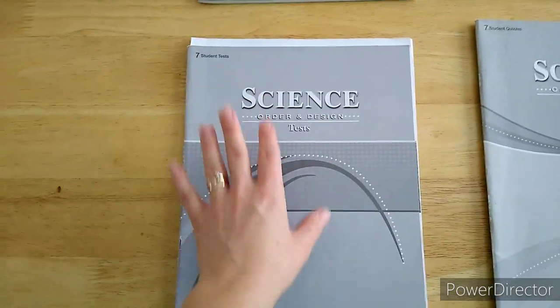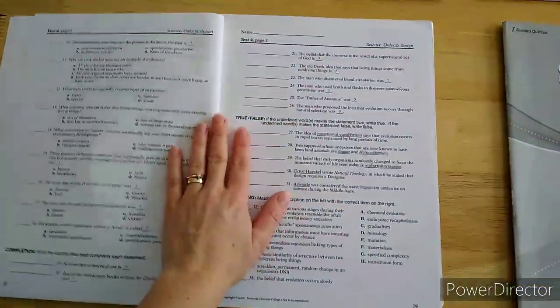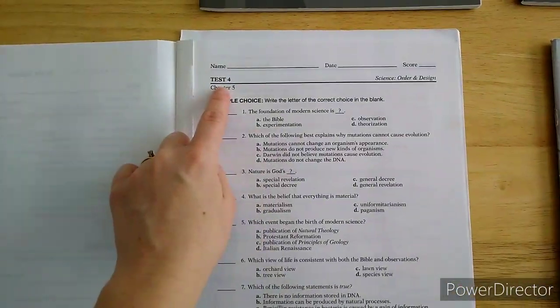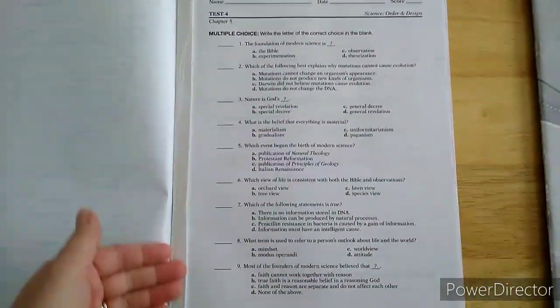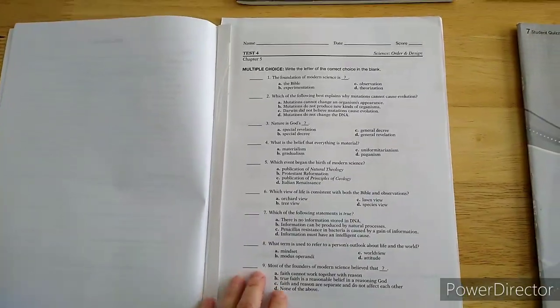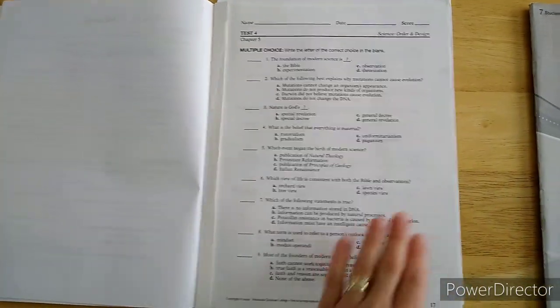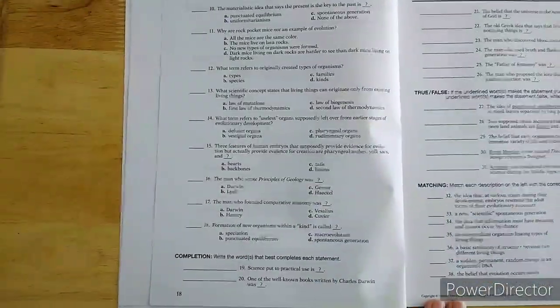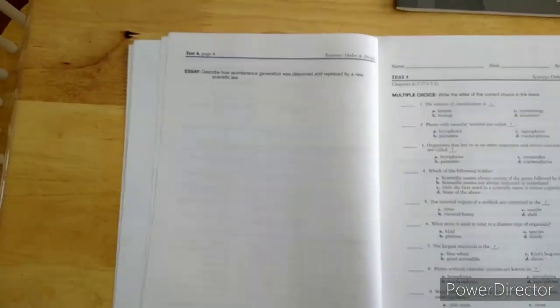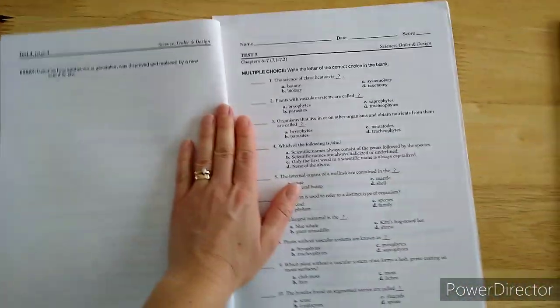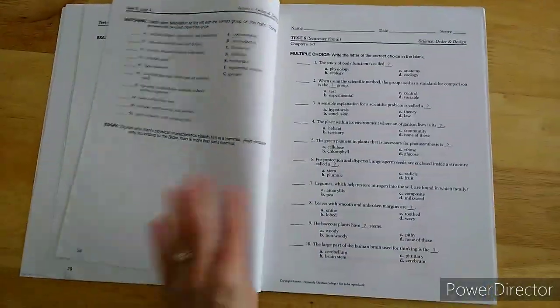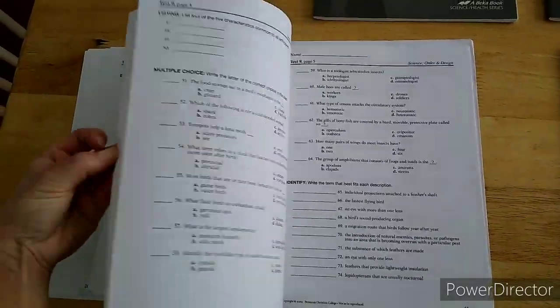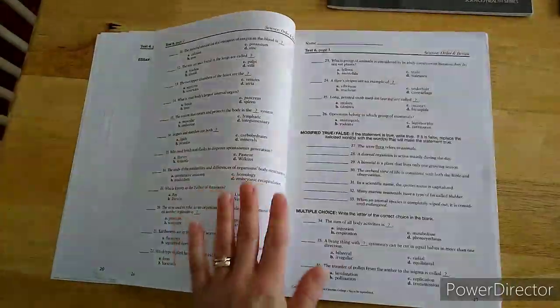If you want to buy or get the student test, here is test 4. This is the test over chapter 5. This is the student's test. You can tear these out and just make copies of them. The tests are kind of long, maybe 3 or 4 pages. Here's page 1 of test 4, page 2, page 3, and page 5. There's usually always an essay. Sometimes there's little diagrams that they have to label.